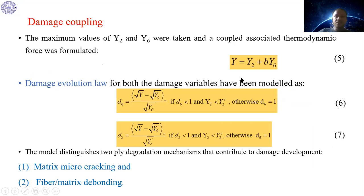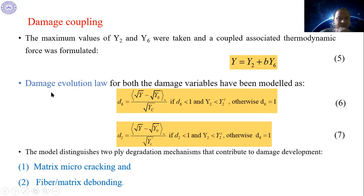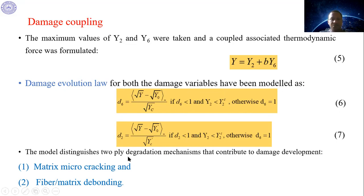Damage coupling is accomplished with a material coupling parameter D. The damage evolution laws for variables D2 and D6 have been modeled accordingly, accounting for both tension and compression in Y2. The model also distinguishes two applied degradation mechanisms: matrix microcracking and fiber-matrix debonding.